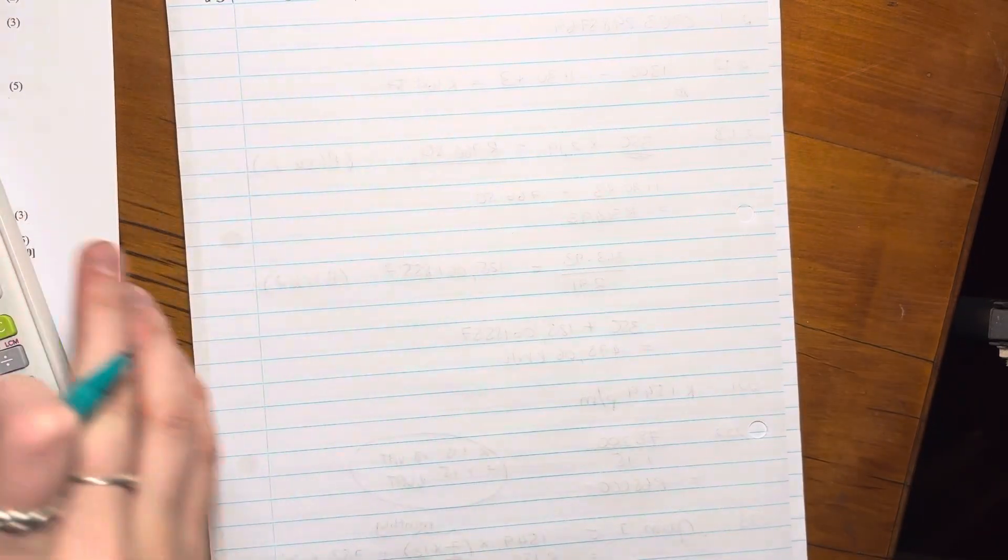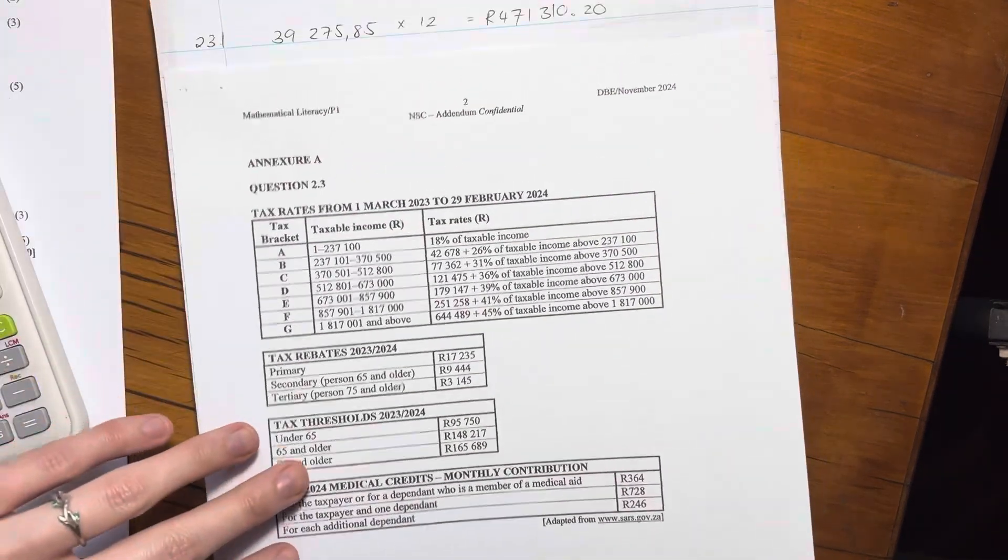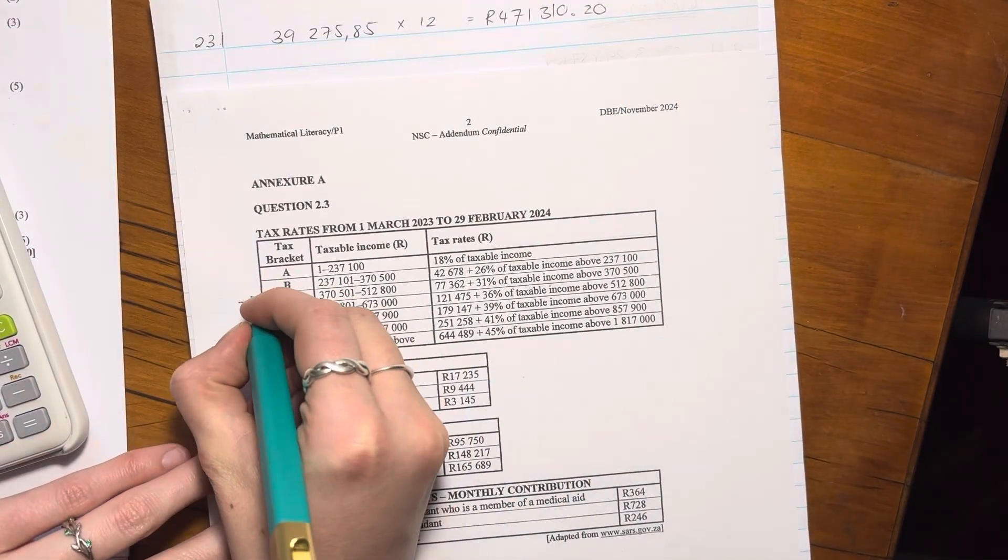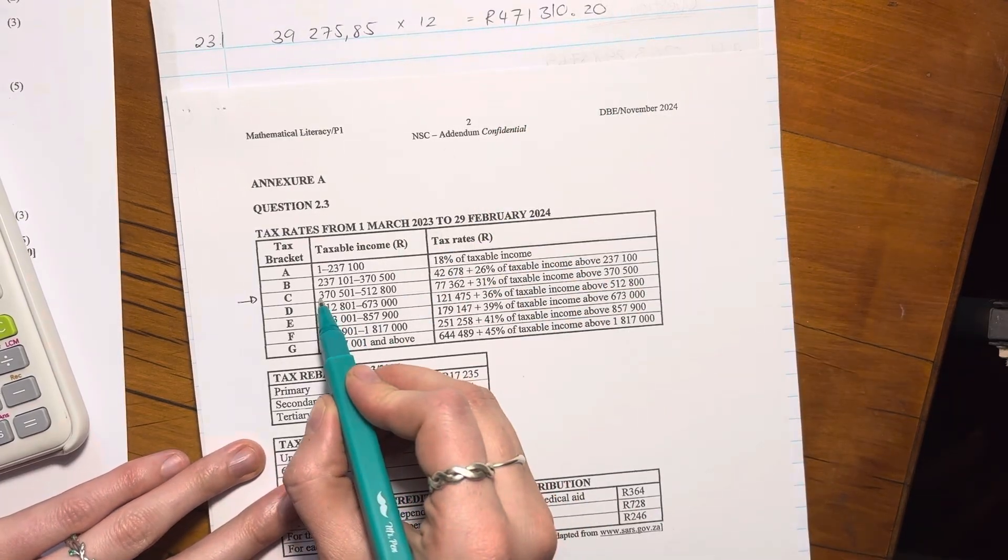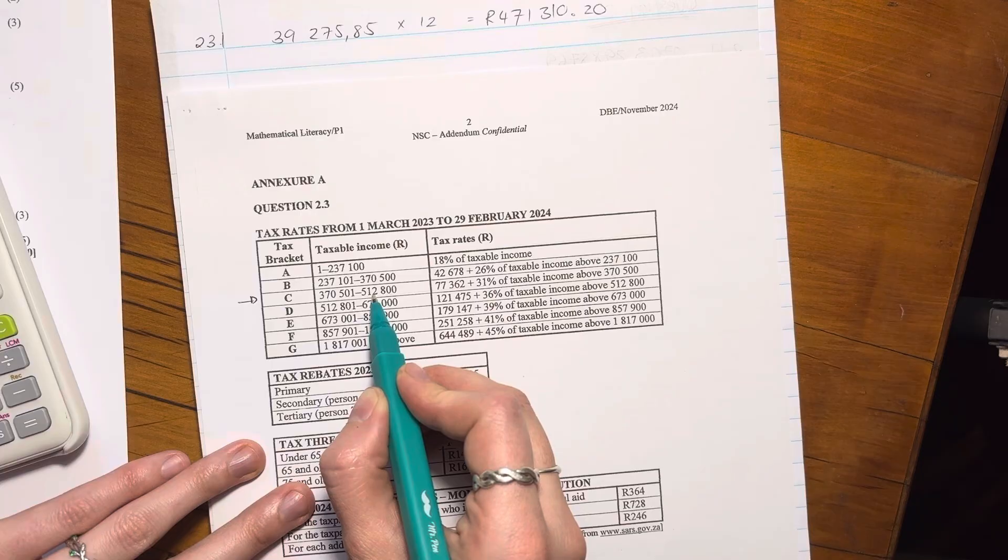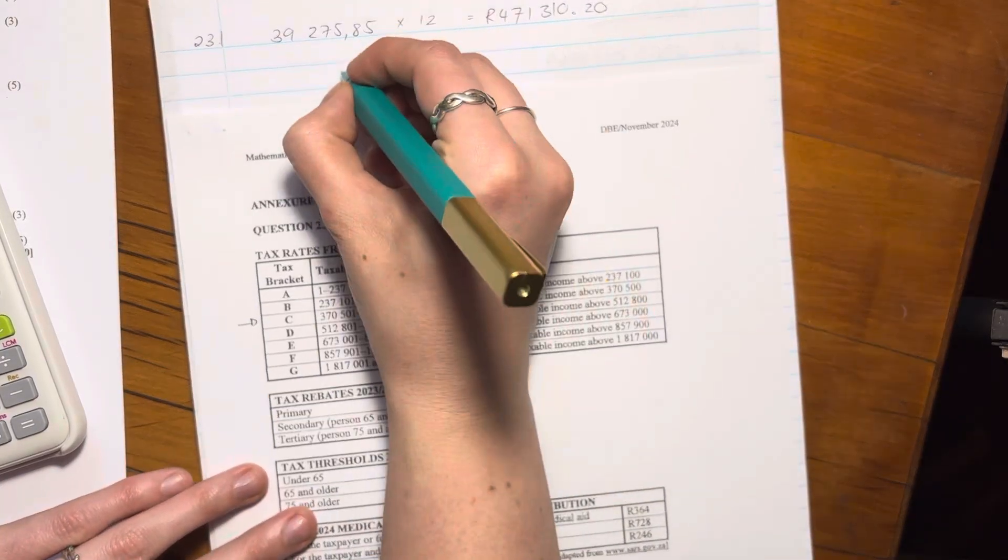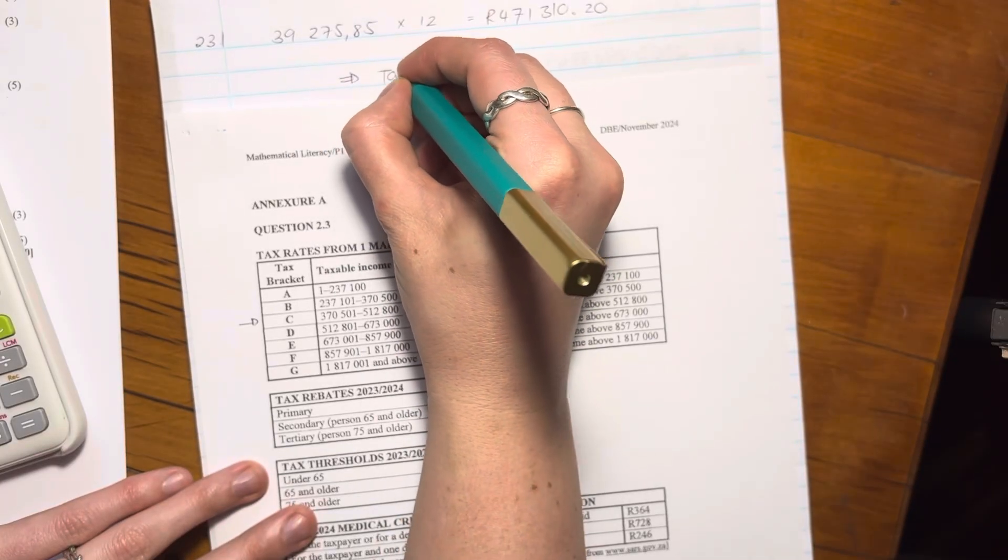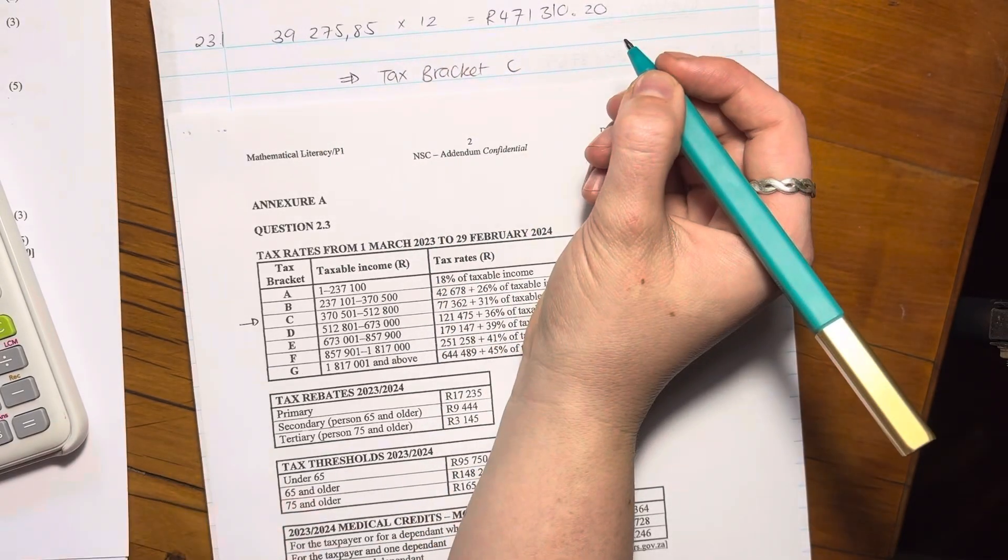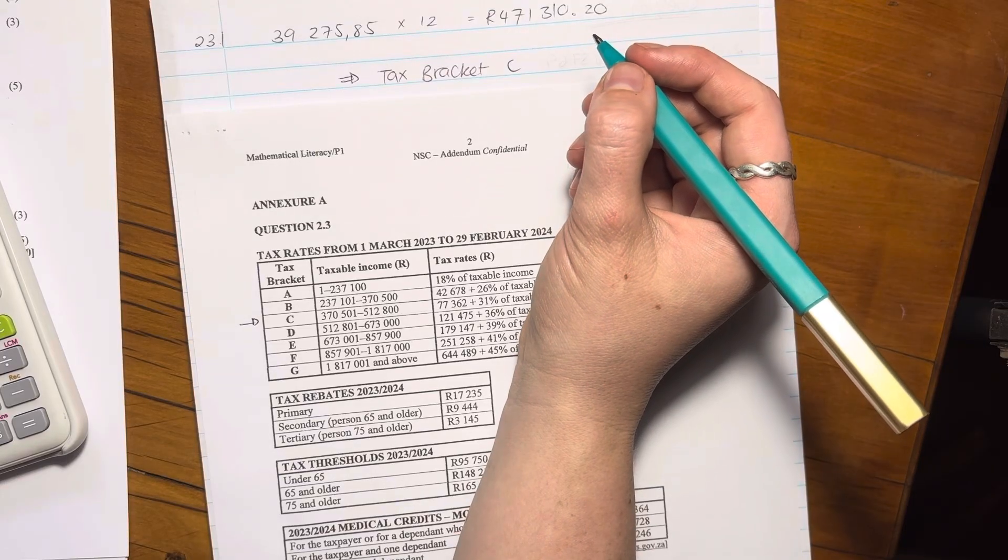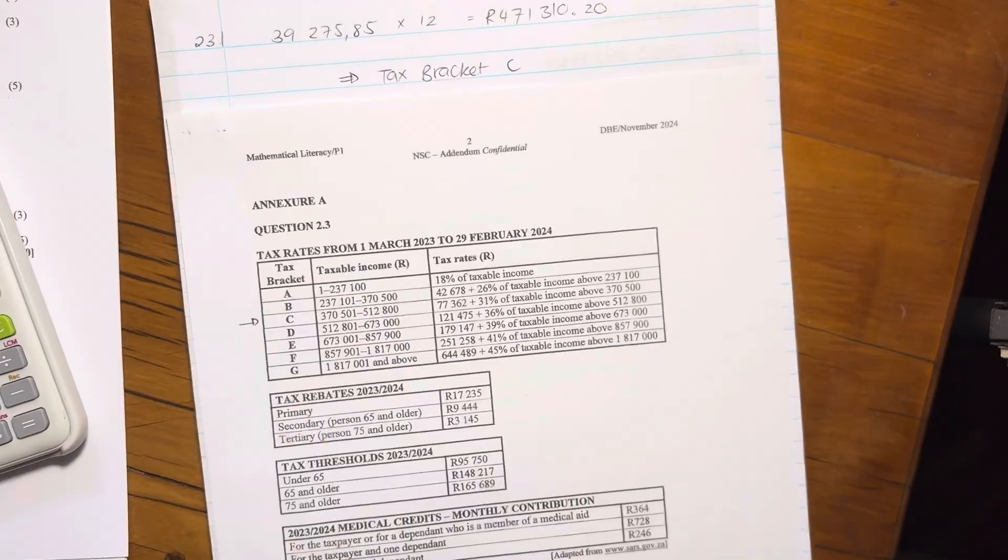Then what you need to do is you need to say, okay well, which tax bracket is she then in? Well, given that amount, I would say she's in tax bracket C because that 471 lies between 370 and 512. So you don't have to write that out because they've given you, they've labeled the tax brackets and you can say, therefore, tax bracket C. So you can say she sits in or give it a little bit of a sentence. But as long as you say tax bracket C, you're in the all clear.